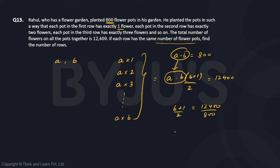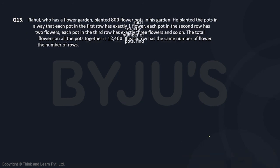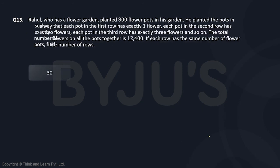From this, the value of b+1 comes out to be 31, and therefore b equals 30. This is what we had to calculate — the number of rows. So the number of rows is 30, and that is the answer for this question.